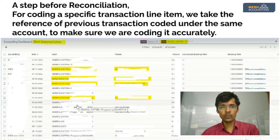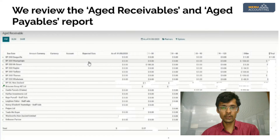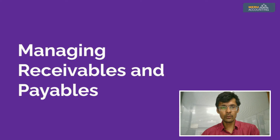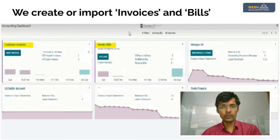Here is how you can see the receivables and the payables report. The payables and receivables report needs to be reviewed so that if there are any transactions which are paid and still appearing in the receivables report, then you need to fix those. Here is how we can discuss the management of payables. Under the sales, we create vendor bills, and under the purchases, we can create bills.